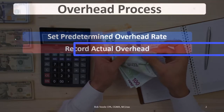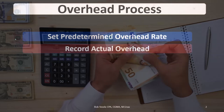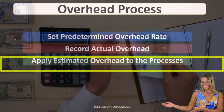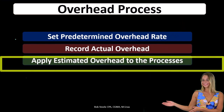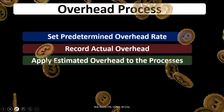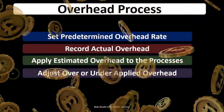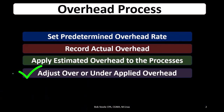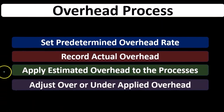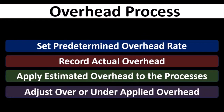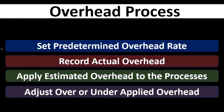Then we're going to record the actual overhead during the period — that's what we did in the prior presentation. We looked at those items that might be included in actual overhead. Next, we want to apply the estimated overhead to the processes, and then adjust for the over or under applied overhead. In other words, we may still have a difference between the actual and estimated overhead that we'll have to account for.